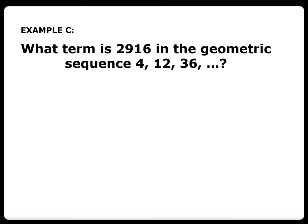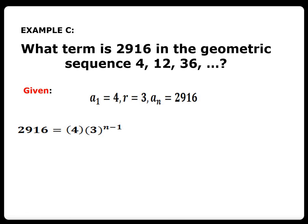Example C: What term is 2916 in the geometric sequence 4, 12, 36? The given: a_1 is 4, r is 3, and a_n is 2916. Using the formula and by substitution, we have 2916 = 4 times 3 raised to n minus 1. To simplify, divide the equation by 4: 2916 divided by 4 is 729. Express 729 in base 3 to have the same base on the right side.